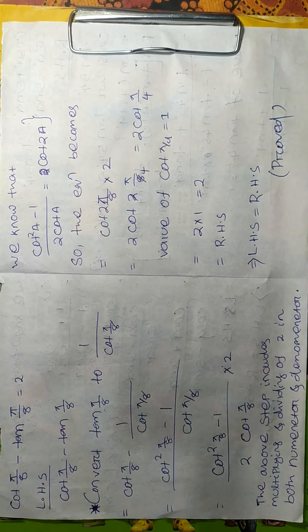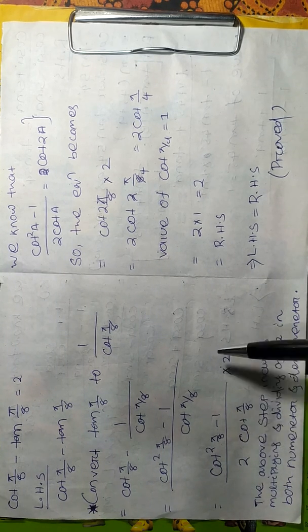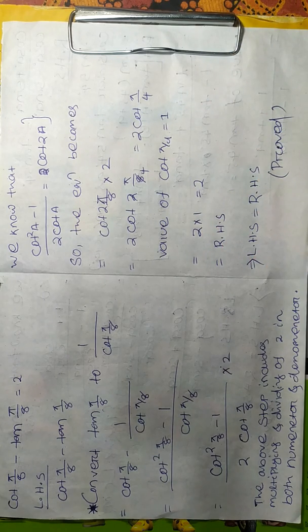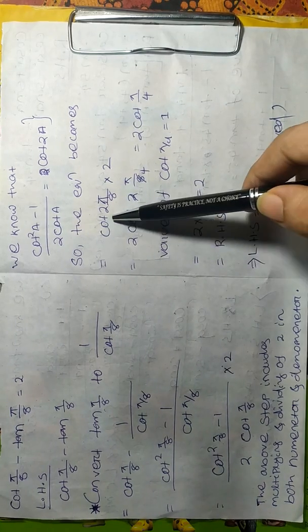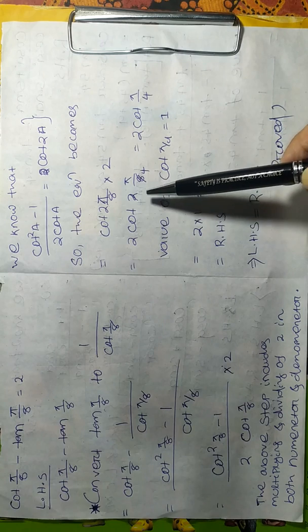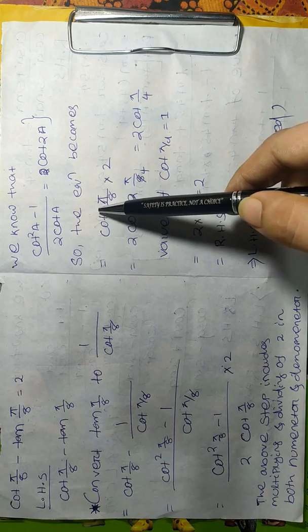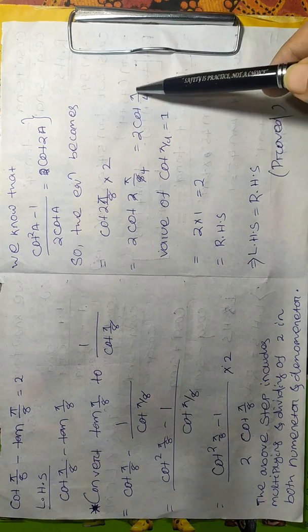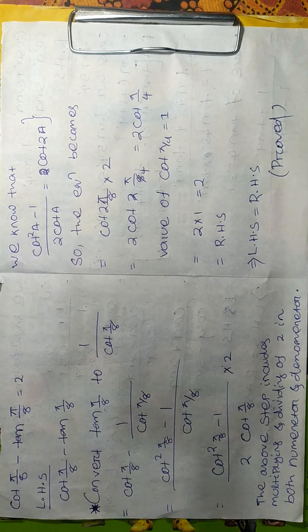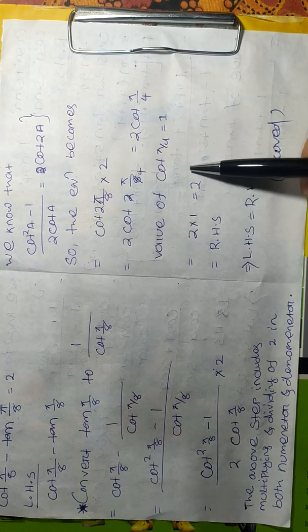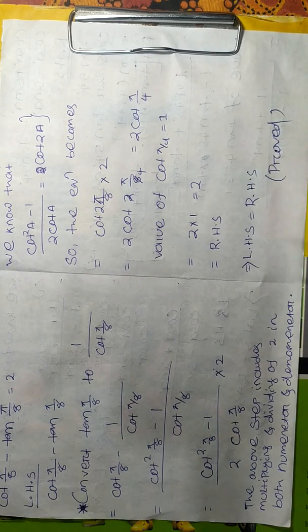The above step includes multiplying and dividing by 2 in both numerator and denominator. We know the cot double-angle formula: cot²a minus 1 divided by 2·cot(a) equals cot(2a). So the equation becomes cot(π/8 × 2). Then basic calculation gives 2 divisible by 8, converting it to cot(π/4), whose value is 1. Substituting this, we get our required answer, which equals the RHS.